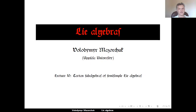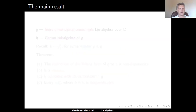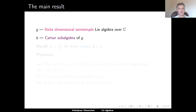Hello and welcome to Lie Algebras. In this lecture, lecture number 10, we will talk about Cartan subalgebras of semi-simple Lie Algebras. Throughout the lecture, G denotes a finite dimensional semi-simple Lie Algebra over the field C of complex numbers, and H denotes some Cartan subalgebra of G.